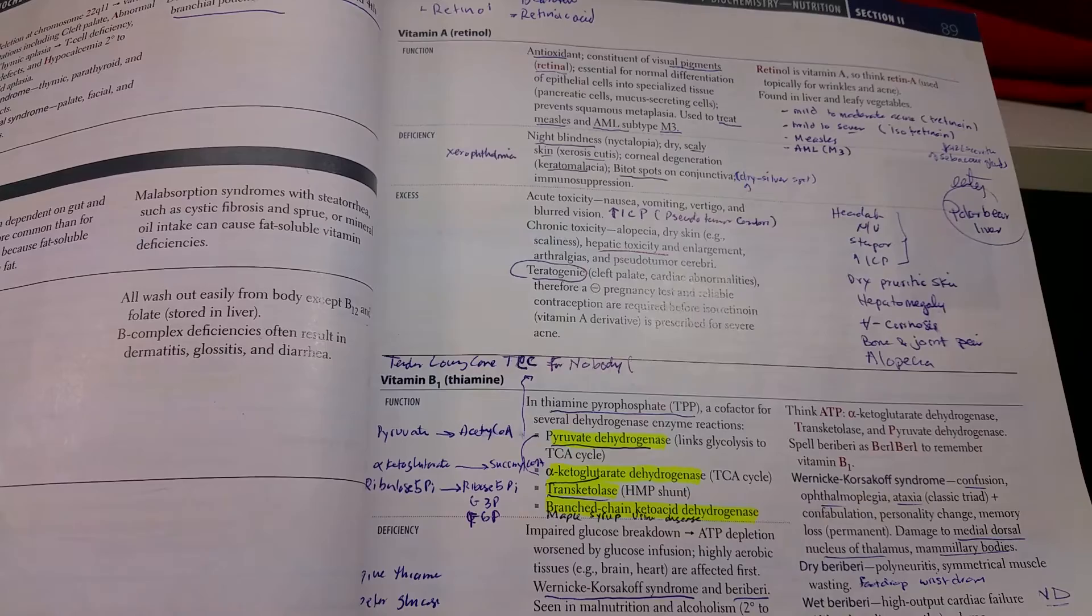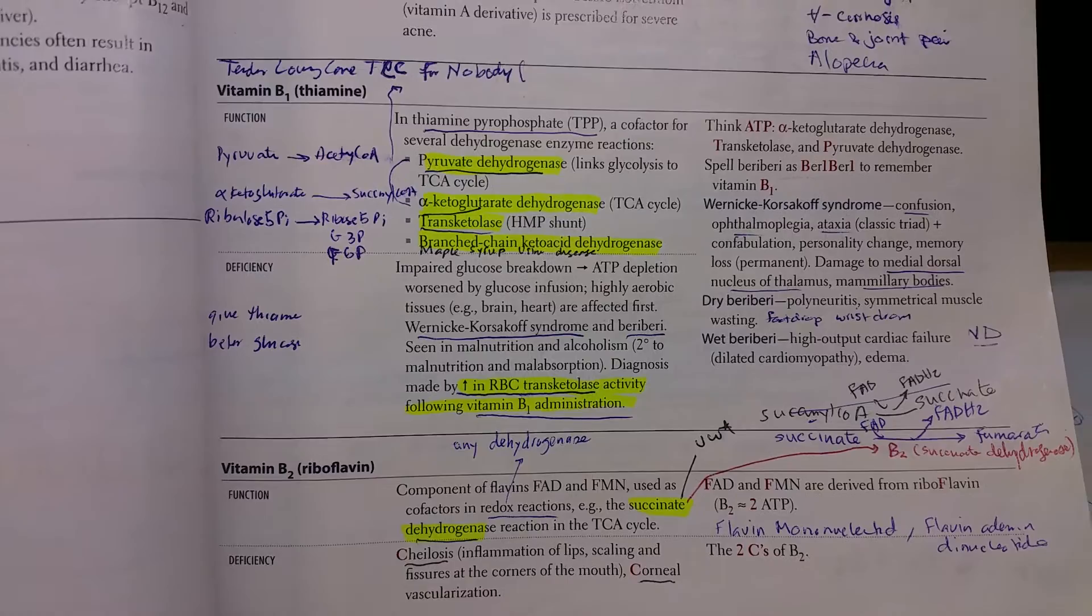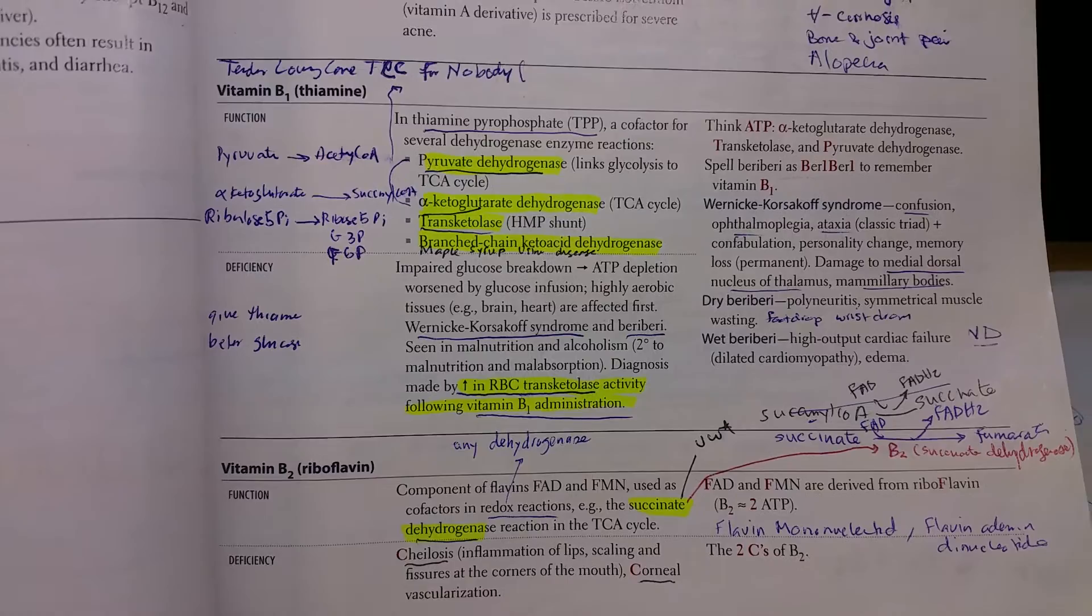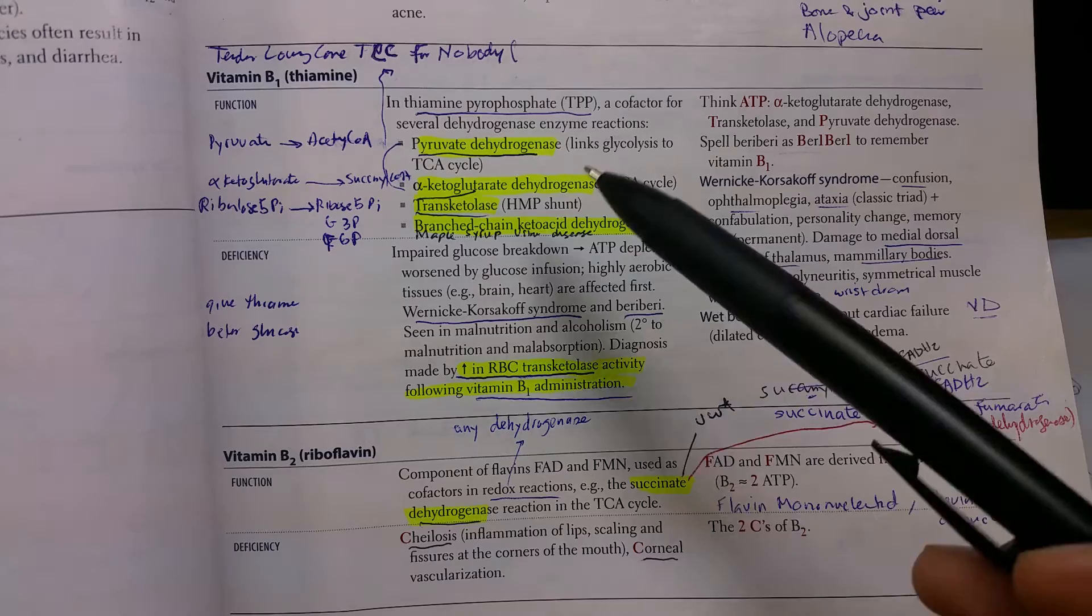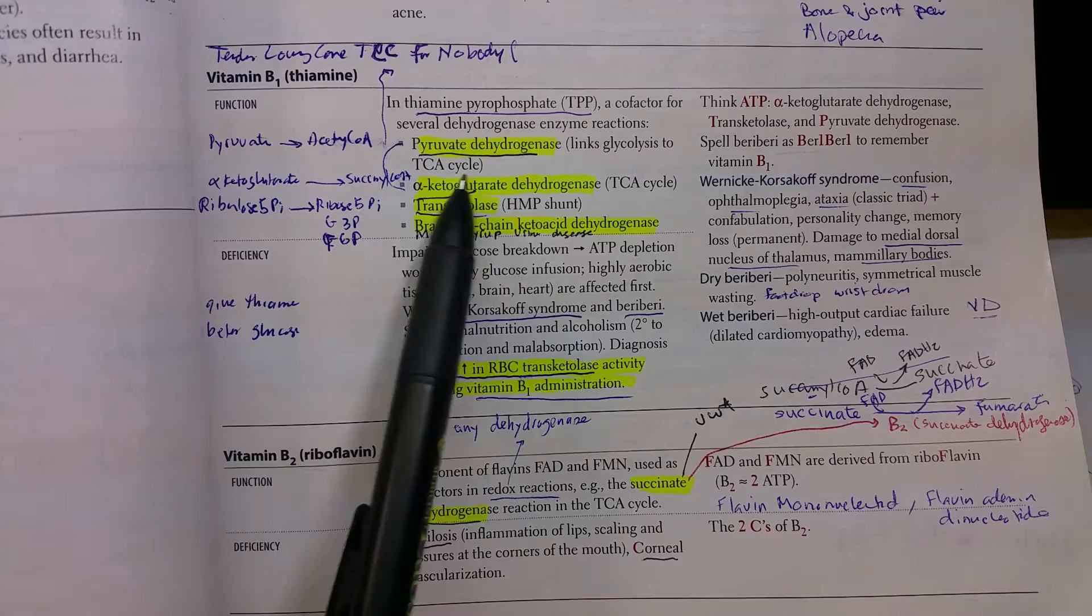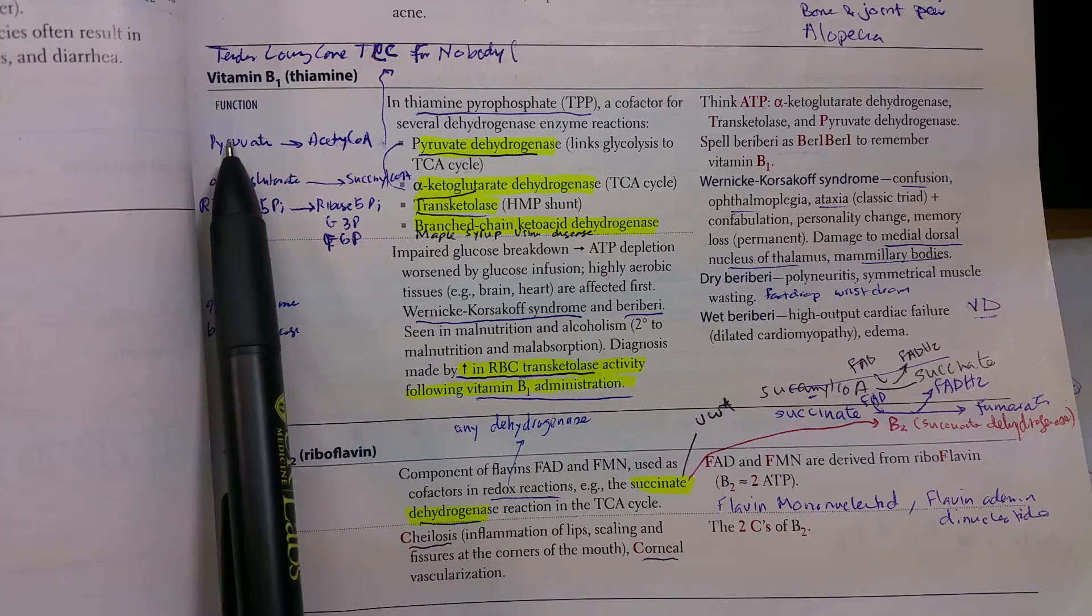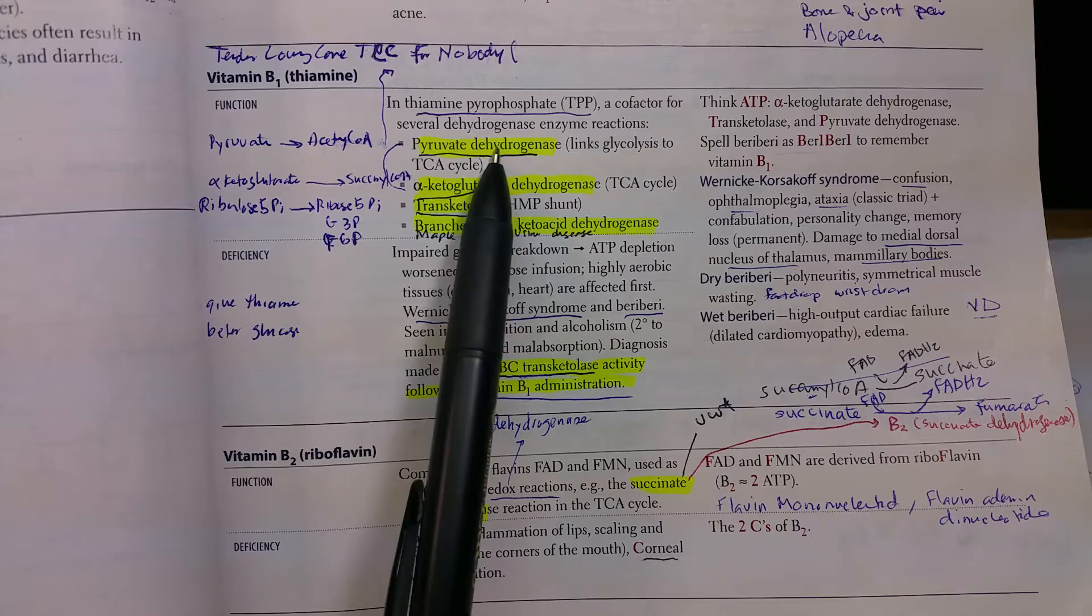We'll talk now about vitamin B1, which is called thiamine. This is a very important vitamin. The active form is called thiamine pyrophosphate, or TPP. Because it's a cofactor in many reactions, many dehydrogenase enzyme reactions, we have to know these enzymes and their functions.